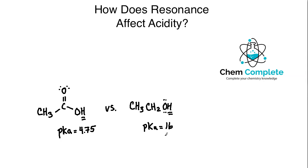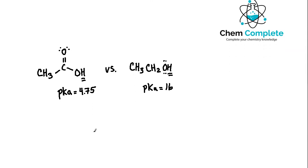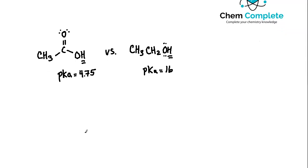Rounding for simplicity, acetic acid has a pKa of about 5 and ethanol is 16, a difference of 11 pKa units. Each jump in pKa by one unit represents a factor of 10 in acidity. So with a difference of 11, we're looking at roughly 100 billion times more acidic, and the main reason for that is resonance.